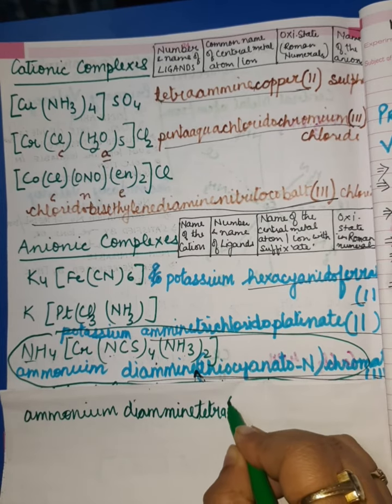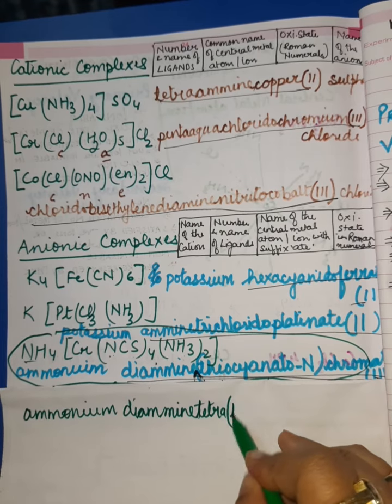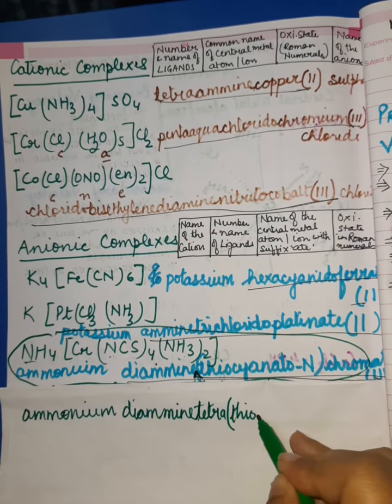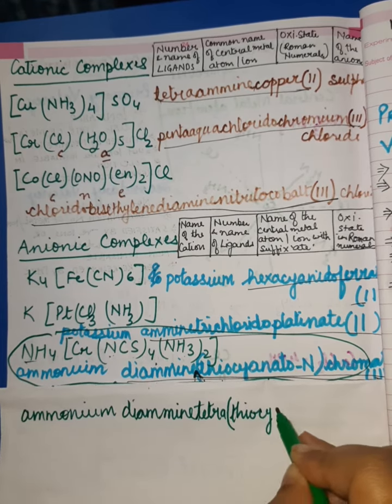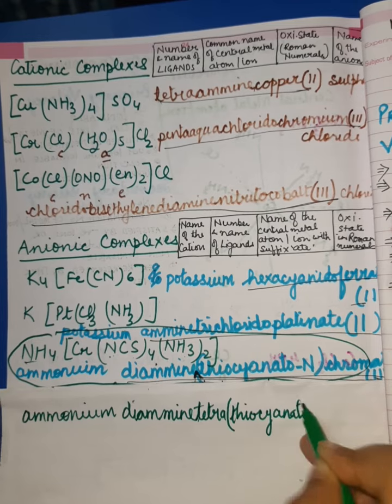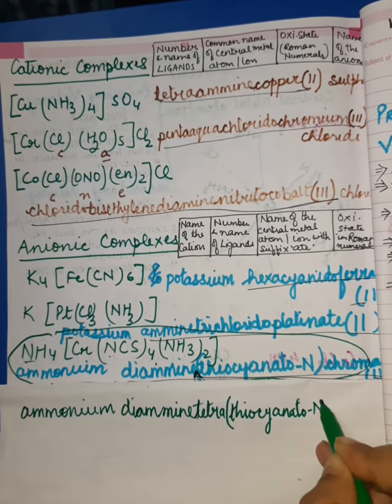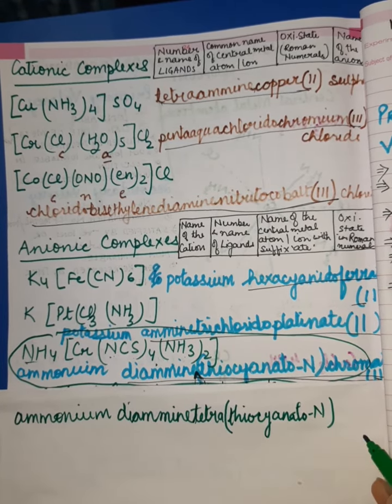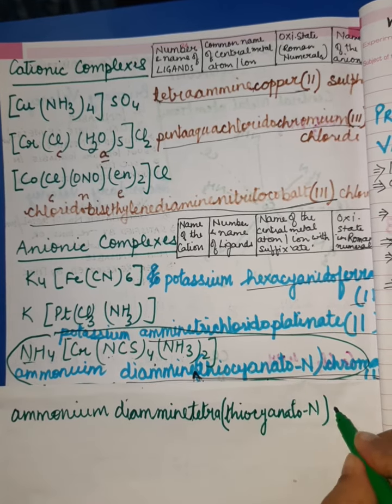Then closing the bracket and writing thiocyanato bonded from site N, followed by the name of the central metal ion, that is chromate.